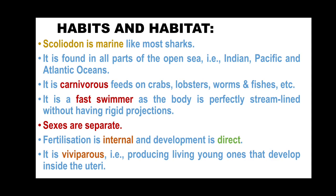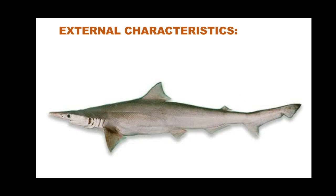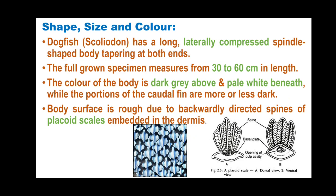Scoliodon is viviparous, that is, producing living young ones that develop inside the uteri. Regarding external characteristics — size, shape, and coloration: dogfish, scientifically called Scoliodon, has a long, laterally compressed, spindle-shaped body tapering at both ends.